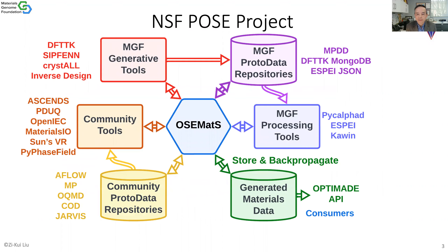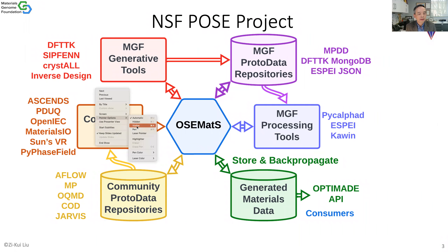This is our grand plan for this project. From my group and the Materials Genome Foundation, we have a number of tools including DFTTK, which we workshopped last December, Superfunds Today, and CrystalR for structure discovery, and also inverse design. These are tools from Penn State, and for those tools we generated the database. We created a portal database mainly through MPDD. With DFTTK from density functional theory and an SBJSON database, we create a type of database.